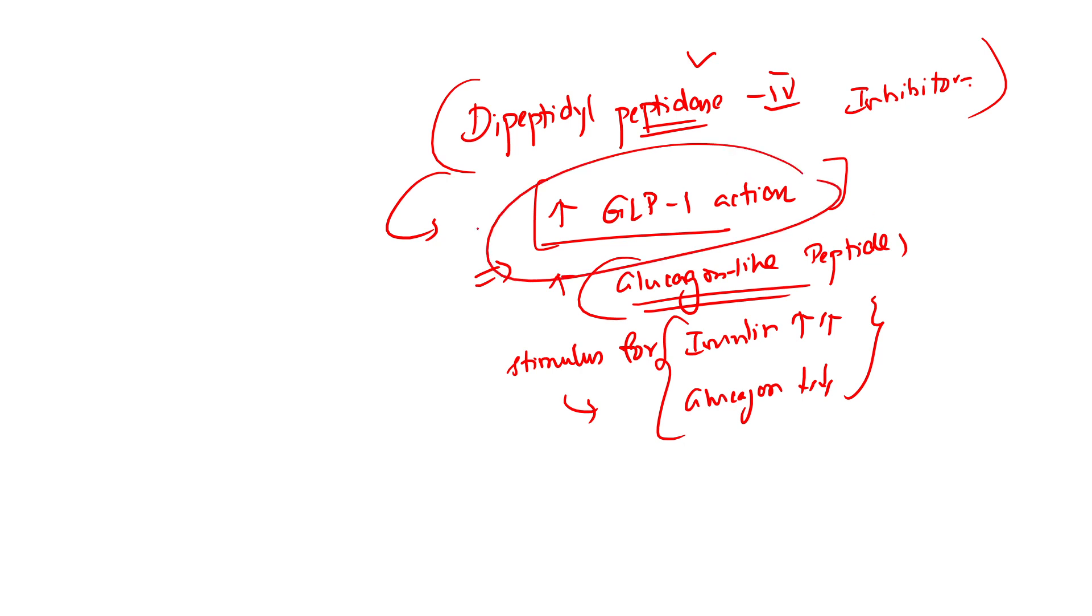This is what I told you about the mixed kind of relationship with that of GLP-1 action. So these inhibitors will break down the enzymes which can break down the GLP-1. So when you are inhibiting these enzymes, then you are increasing the activity of GLP-1. GLP can generally increase the insulin and decrease the glucagon.